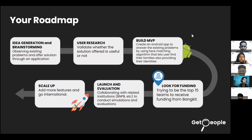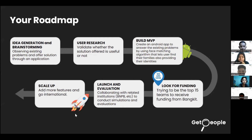This is our team roadmap. First, we did ideation and brainstorming, then user research, and then we built our MVP. Now we are looking for funding to be in the top 15 teams to receive funding from Bangkit. Next, we plan to launch, evaluate, and scale up to add more features and go international.